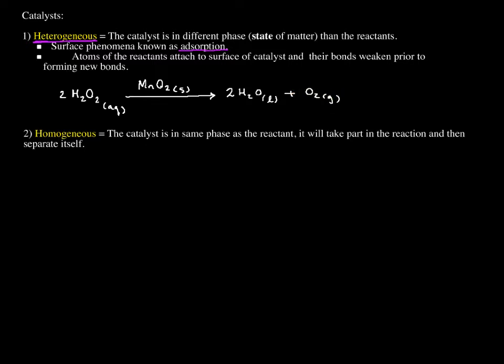Now I'm giving you this example in order to get across homogeneous catalyst, which this time will take part in the reaction and then separate itself. So I'm going to give you the same hydrogen peroxide, 2H2O2 aqueous. Instead of giving you a solid, I'm going to give you something that is also aqueous as a catalyst, and that makes it homogeneous: potassium iodide. Same reaction, almost the same speed as the other catalyst.